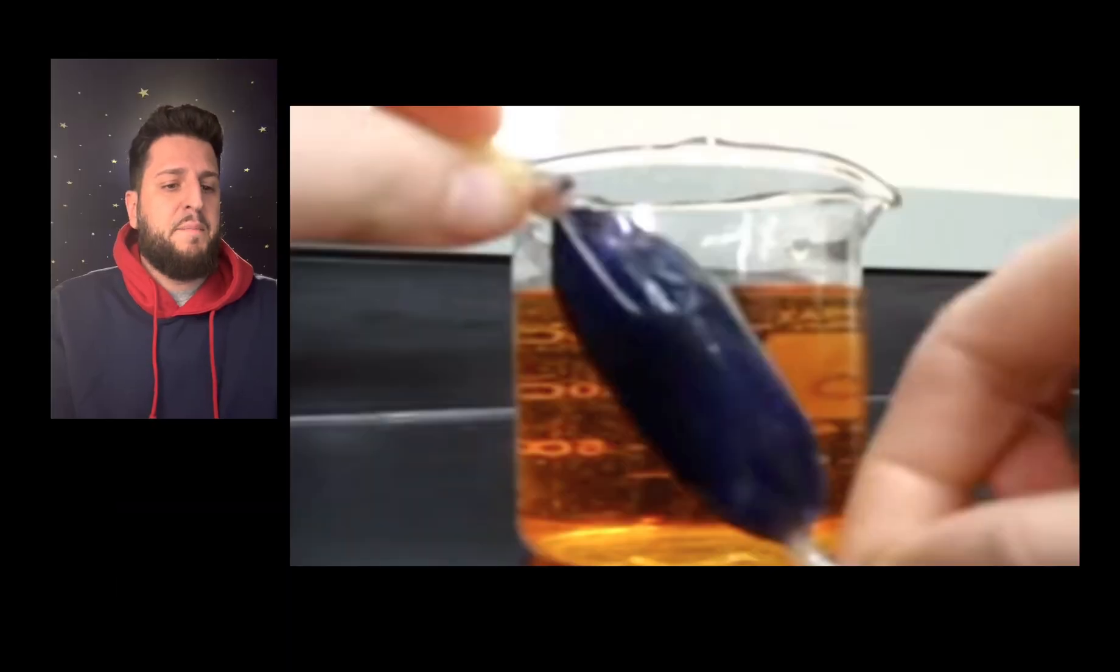After about 10 minutes, you notice that the color has changed within the dialysis tubing. If one were to test for glucose inside the dialysis tubing, it would test positive. If one were to test the liquid within the beaker, there would also be a positive for glucose on the test strip.